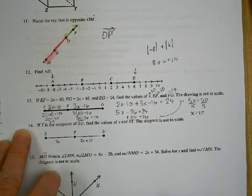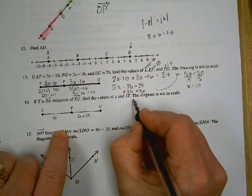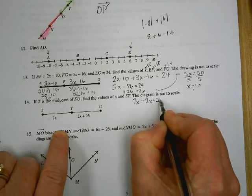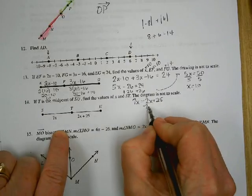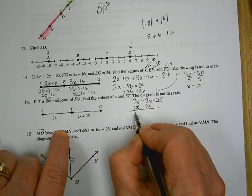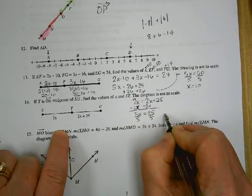Problem 14 says T is the midpoint of SU. What does midpoint mean? It's in the middle, so the stuff on the left and the stuff on the right are equal. So 7x equals 2x plus 25. Subtract 2x from each side. 5x equals 25. x is 5.